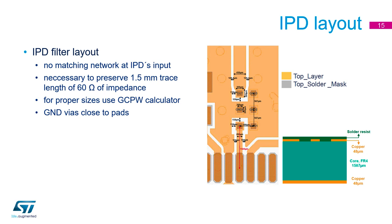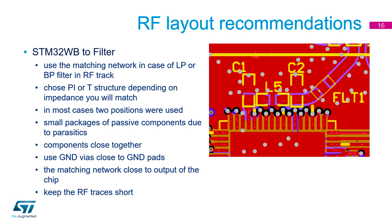Ground vias should be placed close to ground pads. Regarding matching network placement: in the first session we dealt with matching networks. For a low-pass or band-pass filter, use the matching network between the chip and the filter. Choose a Pi or T structure — in most cases only two component positions will be used in the final design. Use small component packages, as they have fewer parasitics and are more suitable for higher frequencies and the track dimensions. Place them together as close as possible, since the inserted track is part of the matching structure and contributes to mismatch — an influence that is often forgotten. Use ground vias close to ground pads, and remember that even a via has its own inductance. The matching network should be close to the output of the chip. Keep RF traces short to reduce losses and radiation, as unsuitable length and mismatch can cause the track to become a radiator.